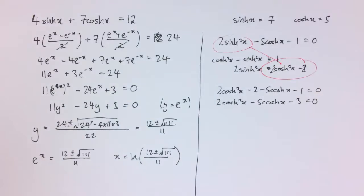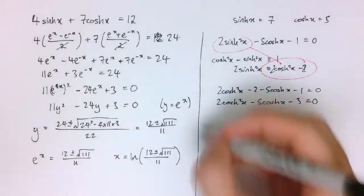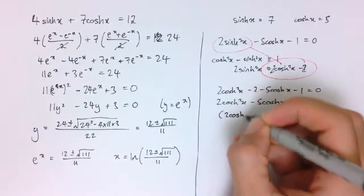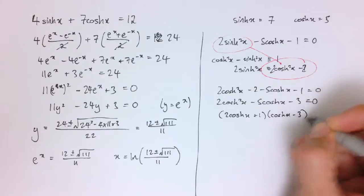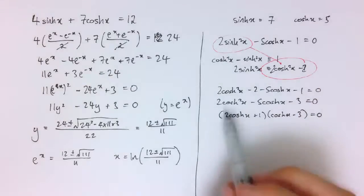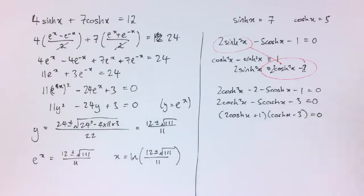And I've engineered this one so it factorizes nicely to give (2cosh(x) + 1)(cosh(x) - 3) equals 0. If it didn't factorize, you could again see this is a quadratic equation in cosh and you could apply the formula, as if it was like 2y² minus 5y minus 3. Whatever, here I can see it just factorizes like this.